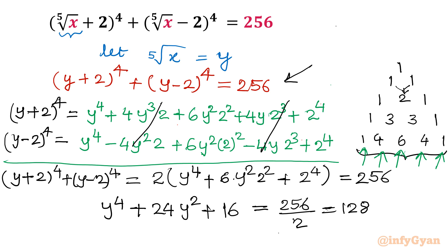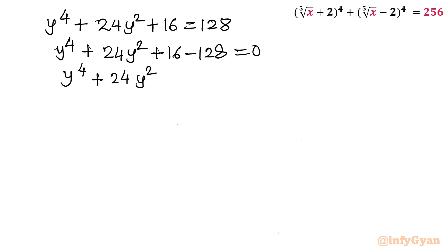So the ultimate equation will become y power 4 plus 24 y square plus 16 equal to 128. Let me write y power 4 plus 24 y square, then I will consider plus 16 minus 128 equal to 0. So this value is 112, giving y power 4 plus 24 y square minus 112 equal to 0.